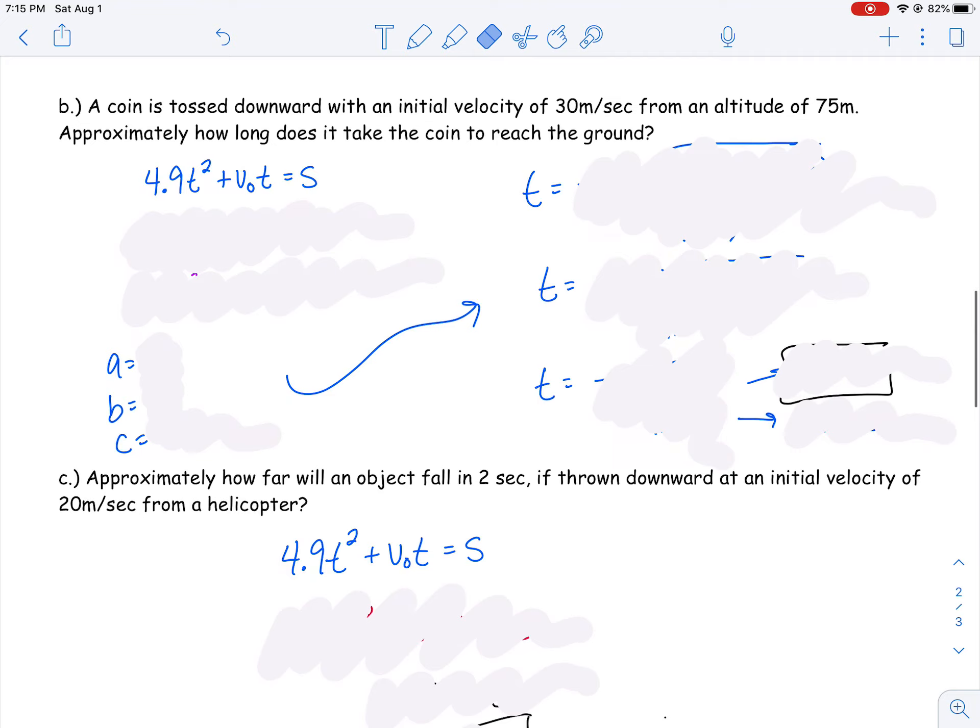All right. Let's look at another one. Part b: a coin is tossed downward with an initial velocity of 30 meters per second. Our v₀ is different this time. Because it was thrown downward, it had an initial velocity. Our initial velocity was 30 meters per second from an altitude of 75 meters. Approximately, how long does it take the coin to reach the ground? We can use that same formula, 4.9t² plus v₀t equals s. Our initial velocity this time was 30, so I can plug that in. And my distance, or altitude, is 75.